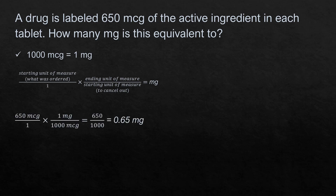Here is my problem. The first part is our starting unit of measure, which is 650 micrograms. We want to get that to milligrams, so we use our conversion — micrograms on the bottom, because that is the unit we want to cancel out, and milligrams on top. Working diagonally, we cross out micrograms, leaving us with milligrams. To solve, multiply across the top and bottom: 650 times 1 is 650, and 1 times 1,000 is 1,000. So 650 over 1,000 equals 0.65 milligrams — that is the answer.